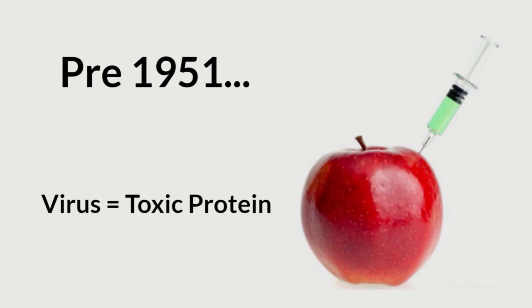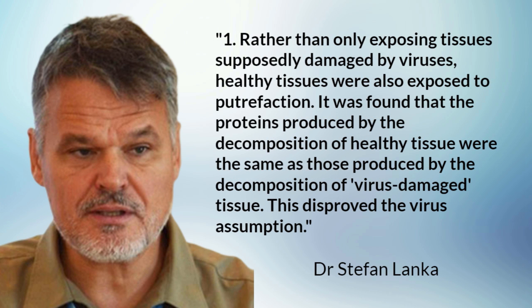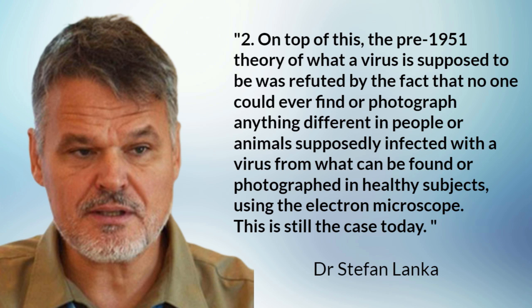A little segue would be helpful here to explain some of the changes in viral theory last century. In these pre-1950s publications, they talked about viruses as toxic proteins. As Dr. Stefan Lenker wrote in 2020, the theory of viruses as protein toxins had to be abandoned in 1951. That year, two control experiments were carried out to test the toxin virus theory. One: rather than only exposing tissues supposedly damaged by viruses, healthy tissues were also exposed to putrefaction. It was found that the proteins produced by the decomposition of healthy tissue were the same as those produced by the decomposition of virus-damaged tissue — this disproved the virus assumption. Two: the pre-1951 theory of what a virus is supposed to be was refuted by the fact that no one could ever find or photograph anything different in people or animals supposedly infected with a virus from what can be found in healthy subjects using the electron microscope. This is still the case today.